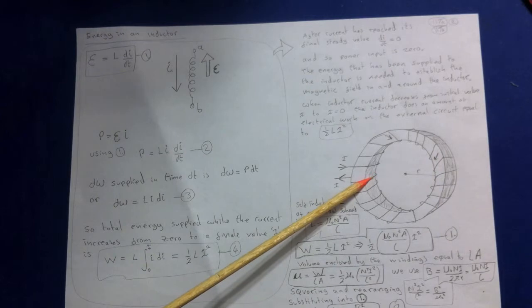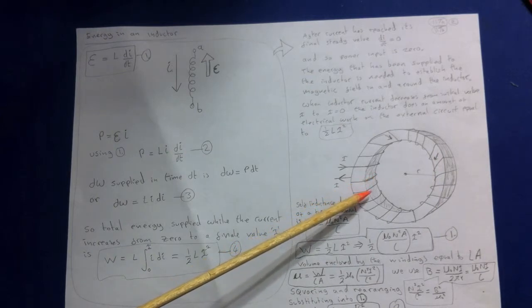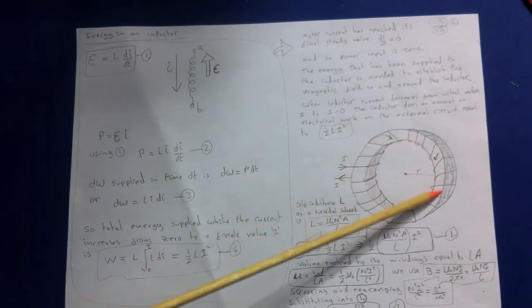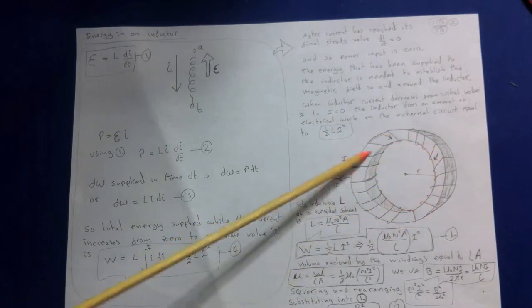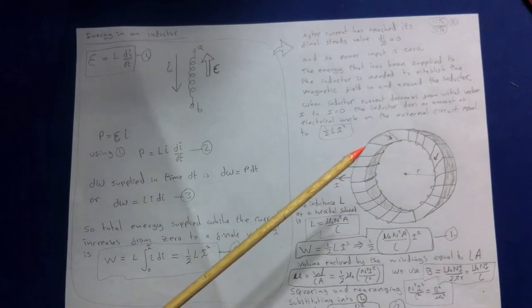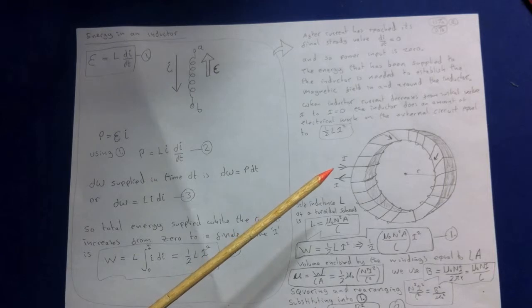The toroidal solenoid here. This system has the advantage that its magnetic field is confined completely to a finite region of space in its interior. So the magnetic field is completely confined within this interior between these coils of wire. Here we assume the cross-sectional area is small enough that we consider the magnetic field to be uniform over the area.